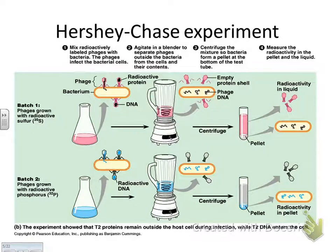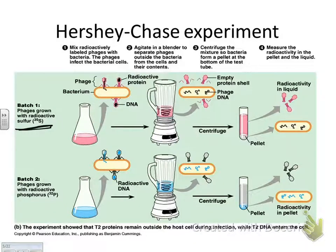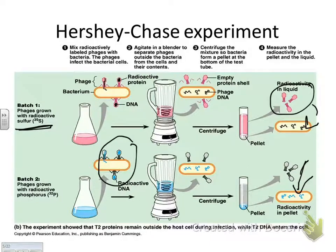Here's a picture of the Hershey and Chase experiment. They took the phage — that little pink guy — with the bacteria, and it put the DNA in. Phage grown with radioactive sulfur: the pink didn't go in. But when they highlighted the DNA, the DNA did go in. Pause the video and see if you can figure out everything this picture is showing you, because reading data from a picture is important for the test.